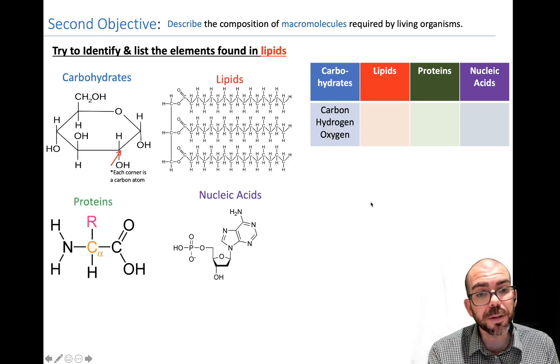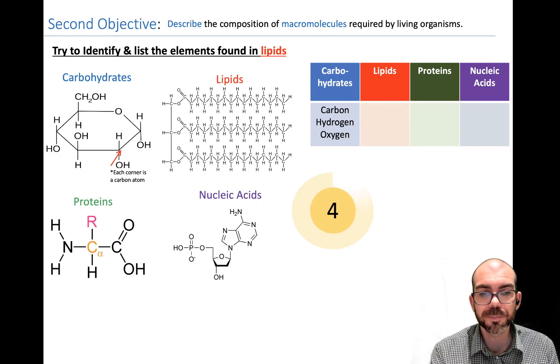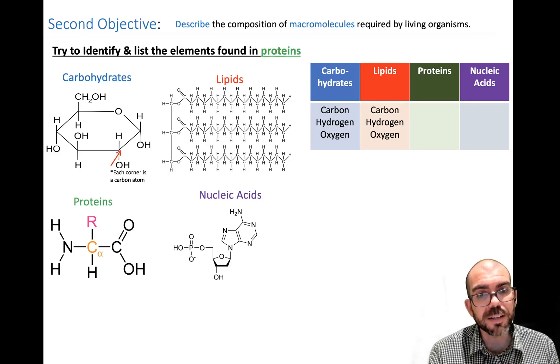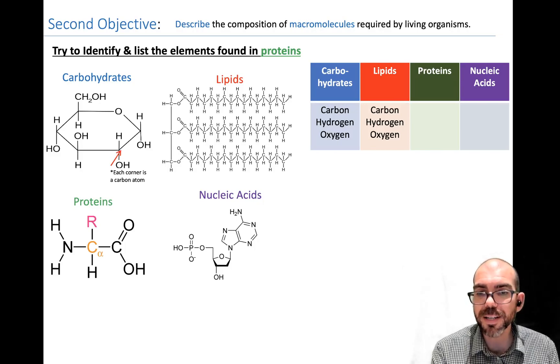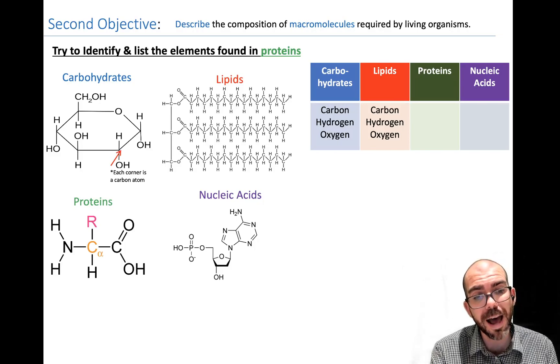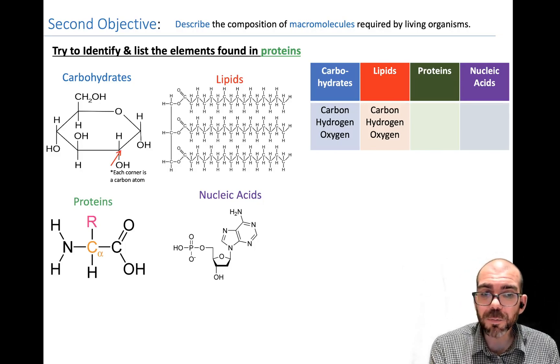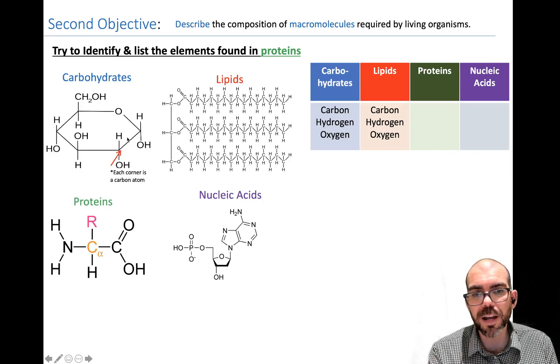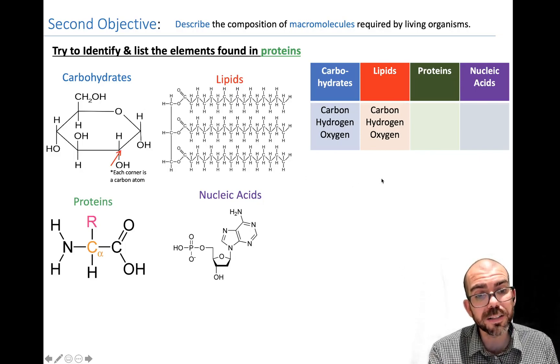Let's try it now with lipids. What atoms make up a lipid? Same thing as the carbohydrates. A lipid is made up of only carbon, hydrogen, and oxygen. So if you were going to try to identify between the two based on what atoms they're made of, not that helpful. But if you look at their shape, you can see carbohydrates not always, but typically are a ring, whereas lipids have these long hydrocarbon chains.